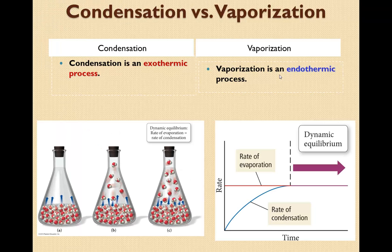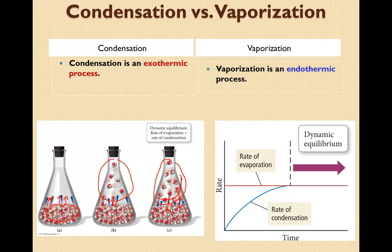Let's take a look at this in a closed container. Here we have a liquid at the bottom, specifically water. The molecules on the surface have enough energy to leave. Eventually it's going to get to the point where there are so many molecules at the top that some of them are recondensing and going back down. The more molecules you have as a gas, the more likely it is for them to come back. Eventually the rate of evaporation, which remains constant, is going to equal the rate of condensation. That's when we have dynamic equilibrium.